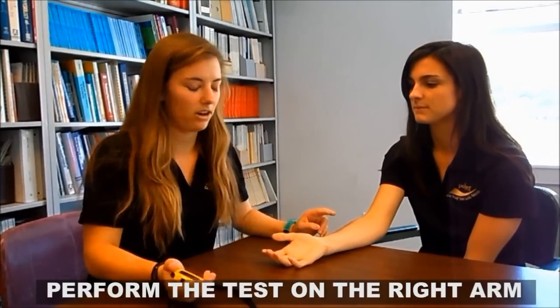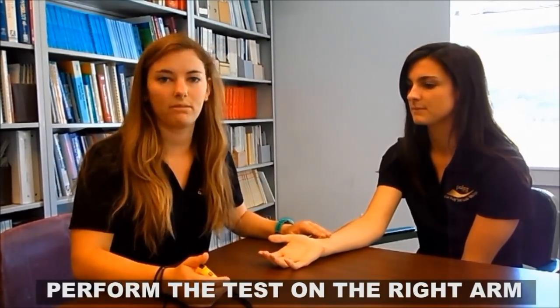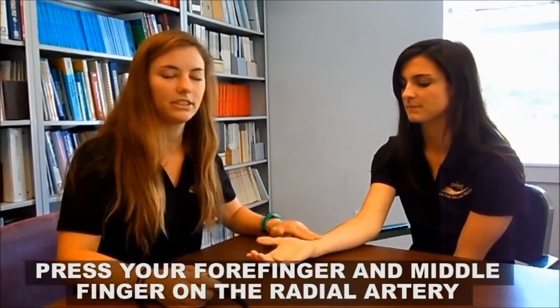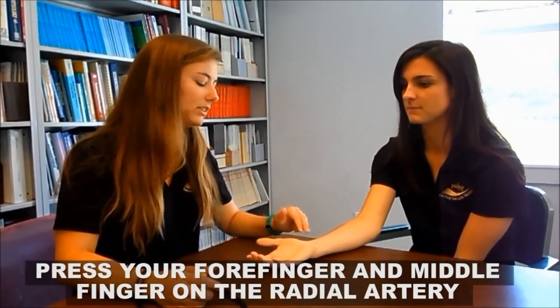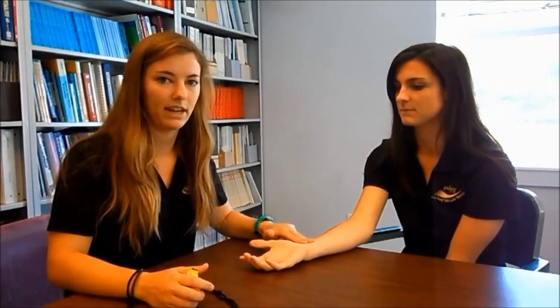So you do it on their right arm and you find the radial artery, which is the radial side is the thumb side. You press your two fingers, not your thumb because that's your own pulse, press it hard enough so that you can find their pulse.